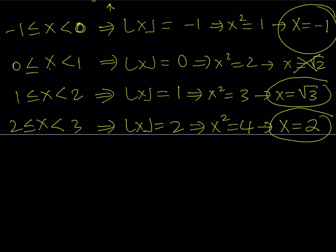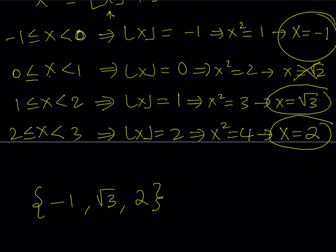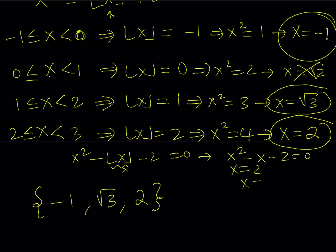Our solution set is negative 1, square root of 3, and 2 — all solutions for x squared minus floor value of x minus 2 equals 0. You could also consider the case where x is an integer: the floor value of x equals x, giving x squared minus x minus 2 equals 0, and x can be 2 or negative 1. This method gives the two integer solutions but misses the radical solution.